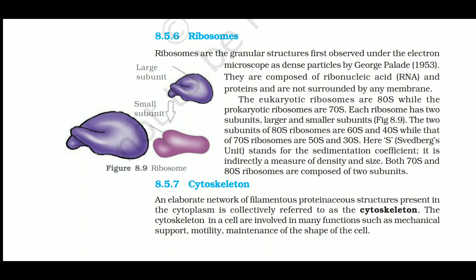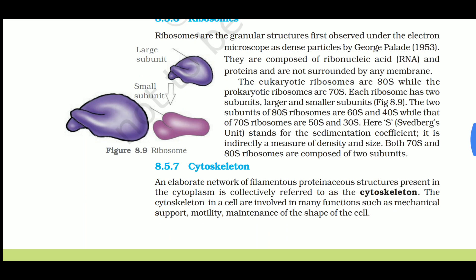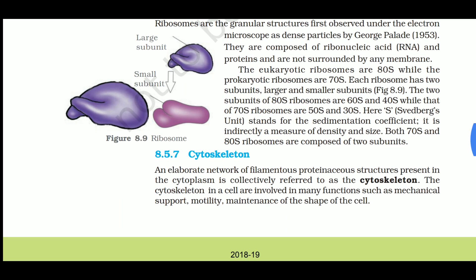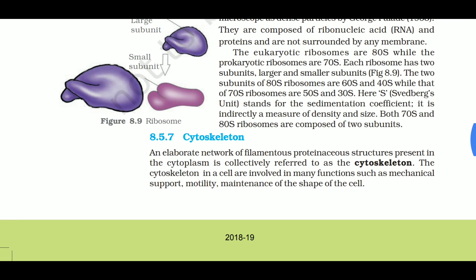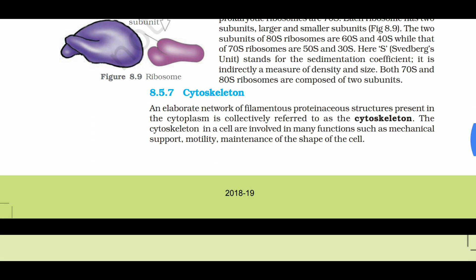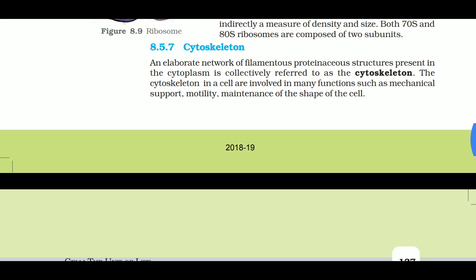S stands for sedimentation coefficient - the Svedberg unit is indirectly a measure of both density and size. Both 70S and 80S ribosomes are composed of two subunits. Next: the cytoskeleton - an elaborate network of filamentous protein structures present in the cytoplasm, collectively referred to as the cytoskeleton. It is involved in mechanical support, motility, and maintenance of cell shape.